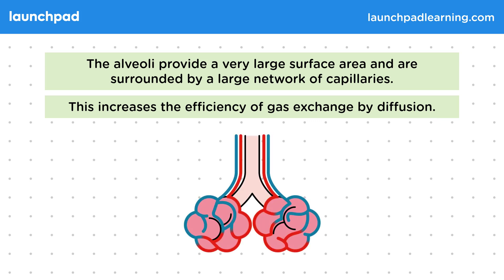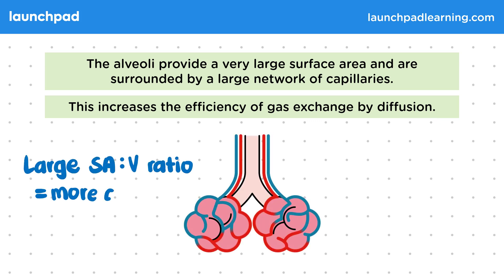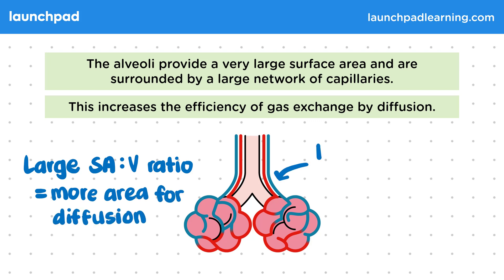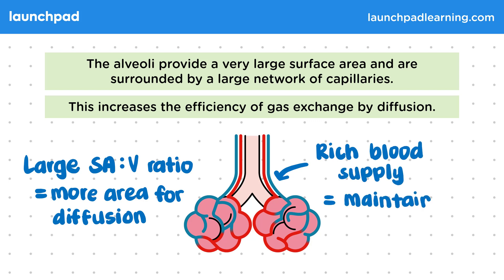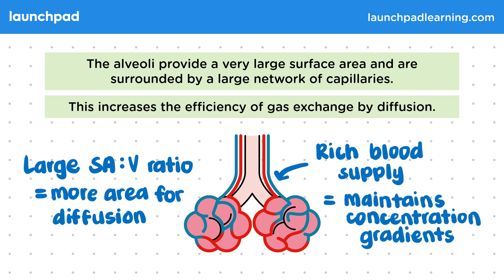Alveoli have a large surface area to volume ratio, which means that there's more area for diffusion. They also have a rich blood supply, which maintains a steep concentration gradient as the blood is continually replaced. In the exam you might be given a diagram and information about structures like the alveoli and be expected to remember what makes them an effective exchange surface.